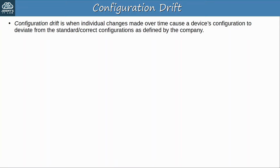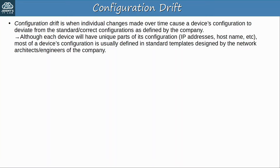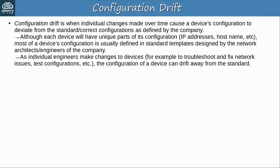Each device in a network typically doesn't have a totally unique configuration. Although each device will have unique parts — for example IP addresses and its hostname — most of a device's configuration is usually defined in standard templates designed by the network architects or engineers of the company. For example, you can expect all of your routers to have the same SNMP configurations, the same syslog configurations, the same AAA configurations for logging in, one or two WAN interfaces, one or two LAN interfaces, etc. But as individual engineers make changes to devices — for example to troubleshoot and fix network issues, test configurations, etc. — the configuration of a device can drift away from the standard.